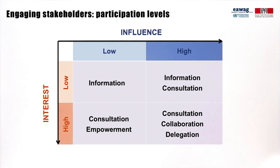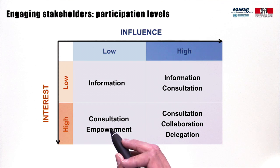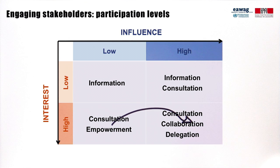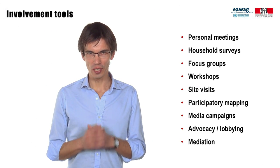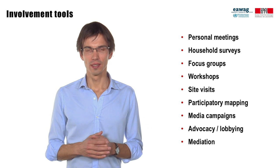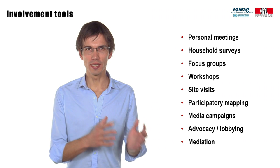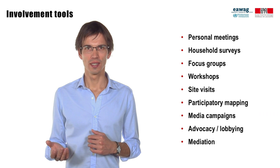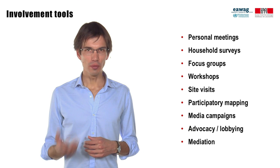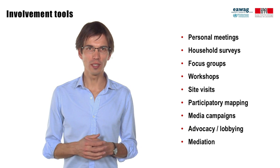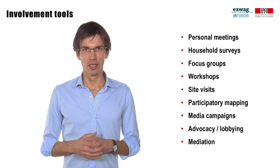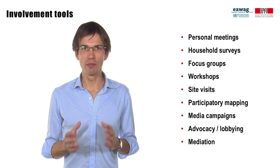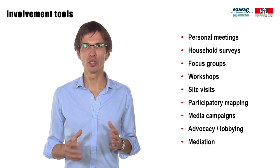Know that the stakeholder analysis is an iterative process. A stakeholder that starts with low influence may gain influence if empowered and may end up in a higher quadrant. Typically, this could be the case with an organized group of mechanical service providers. There are different tools to engage stakeholders — for example, personal meetings, household surveys, focus group discussions, workshops, site visits, participatory mapping, media campaigns, advocacy, lobbying, or mediation. Please refer to the Fecal Sludge Management book to learn more about these involvement tools and to which level of participation they correspond. You may also have a look at the module on Tools for Institutional and Political Economy Analysis for Sanitation Solutions in our MOOC on Sanitation Planning.